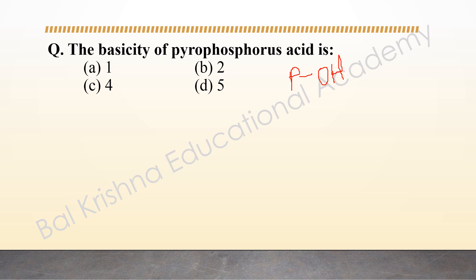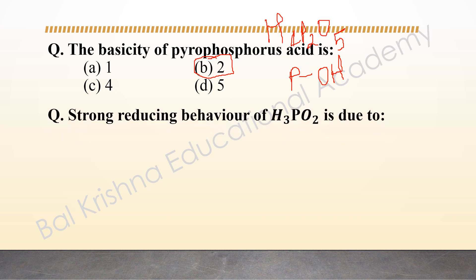The H⁺ is released from the P-OH bond, and the number of H⁺ released determines the basicity of the oxo acid. In H₄P₂O₅ (pyrophosphorous acid), there are 2 P=O bonds, 2 P-OH bonds, 2 P-H bonds, and 1 P-O-P bond. Since there are 2 P-OH bonds, the basicity is 2 — it is dibasic in nature.